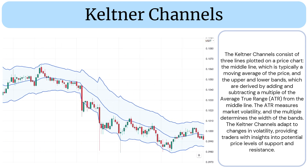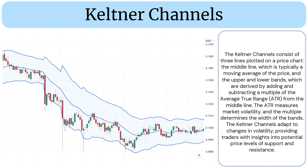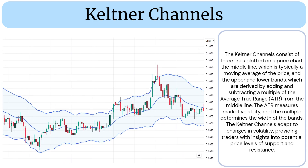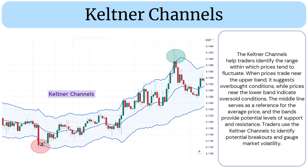The Keltner Channels adapt to changes in volatility, providing traders with insights into potential price levels of support and resistance. They help traders identify the range within which prices tend to fluctuate. When prices trade near the upper band, it suggests overbought conditions, while prices near the lower band indicate oversold conditions. The middle line serves as a reference for the average price, and the bands provide potential levels of support and resistance. Traders use the Keltner Channels to identify potential breakouts and gauge market volatility.